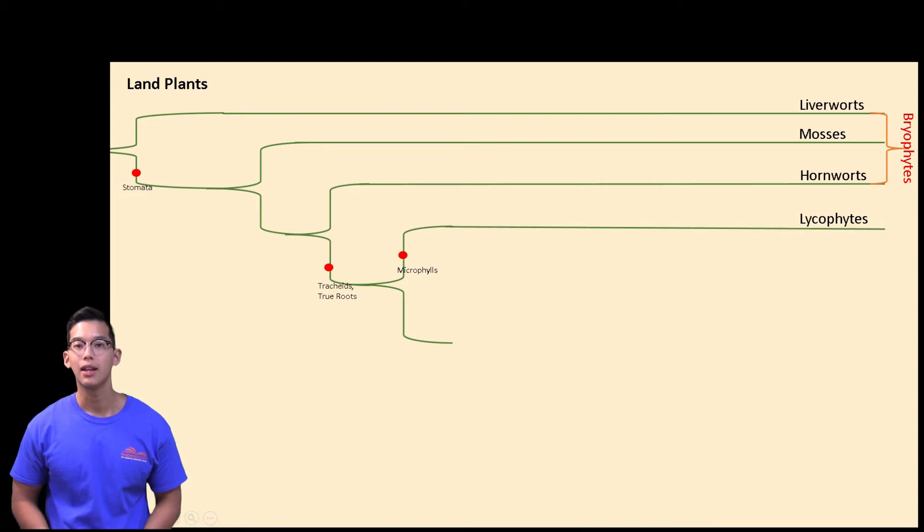The next group of land plants that we'll be talking about is our lycophytes. The lycophyte synapomorphy includes microphylls, or a single leaf that's unbranched. Our lycophytes also have a dominant sporophyte generation, stroboli, or groups of sporangium at the tip, and they have true dichotomous branching roots.